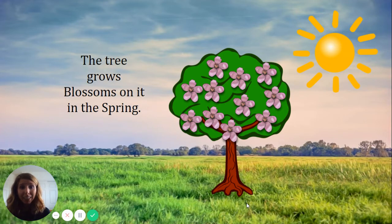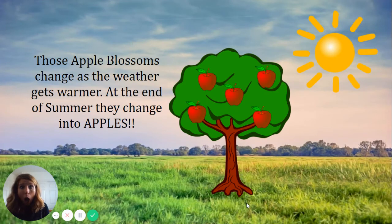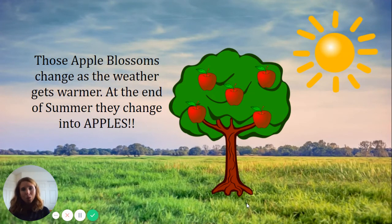They are pink! Let's see what happens next. Those apple blossoms change as the weather gets warmer. At the end of the summer, they change into apples. Look, we have apples on our apple tree! So that's where apples come from. I'm so glad you learned with me today — bye bye, friends!